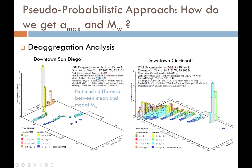Now if I look at a different site — say, right on the Ohio River in downtown Cincinnati — same 2,475-year return period, the acceleration is much smaller: 0.07g. But look at the mean and modal magnitudes: the mean is 6.3, but the modal is 7.7. Massively different. There's a huge difference in potential scenario events we could choose, and depending on where we're located, that choice can make a very big difference.